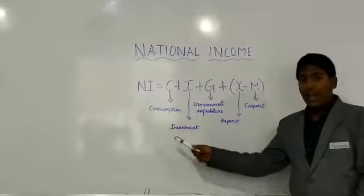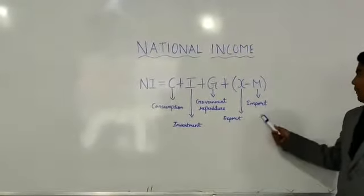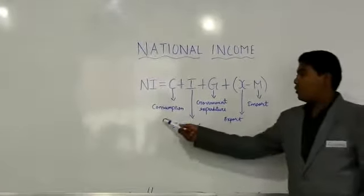C is consumption, I is investment, G is government expansion, X is export, M is import.